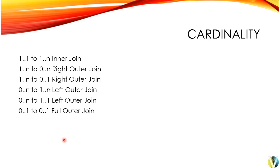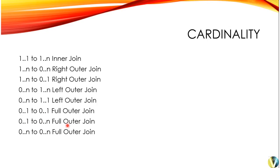Here is the mapping of cardinality to join types: 1 to 1 or 1 to n results in an inner join. 1 to n to 0 to n is a right outer join. 1 to n to 0 to 1 is also a right outer join. 0 to n and 1 to n is a left outer join. 0 to n to 1 to 1 is a left outer join. 0 to 1 to 0 to 1 is a full outer join. 0 to 1 and 0 to n is a full outer join. 0 to n to 0 to n is also a full outer join.